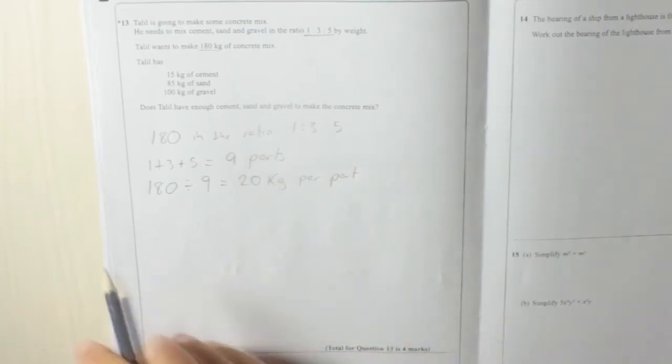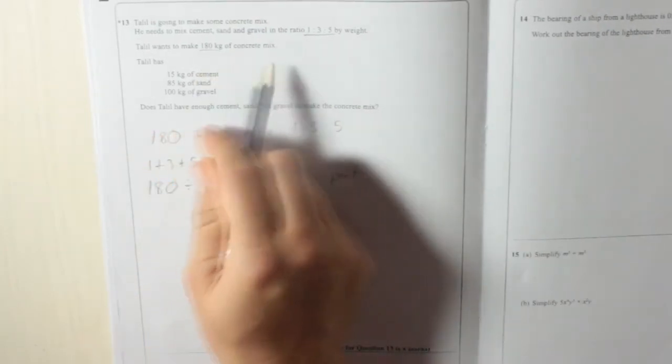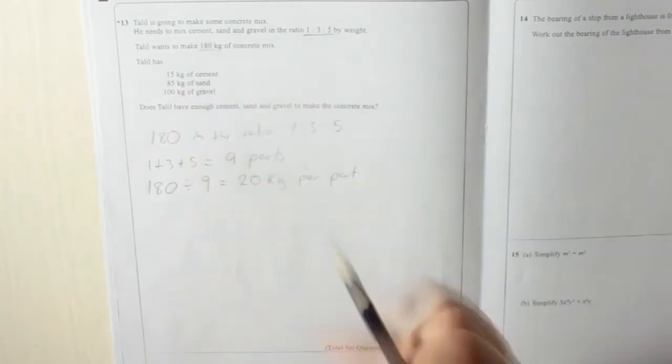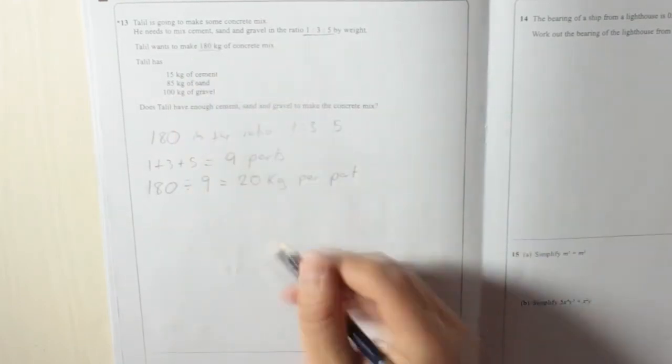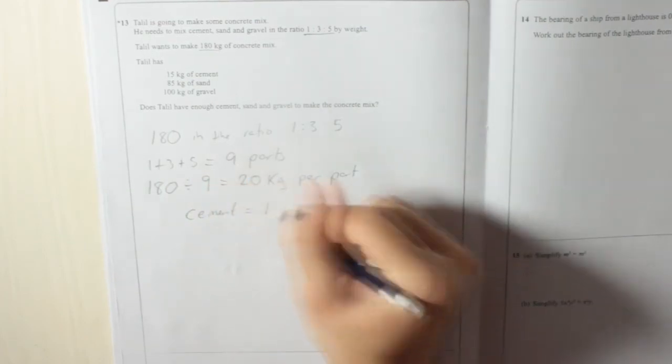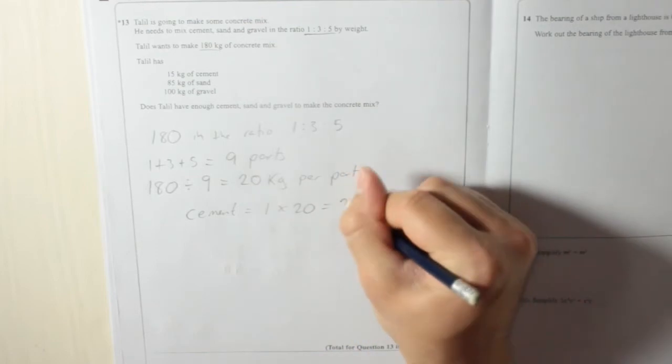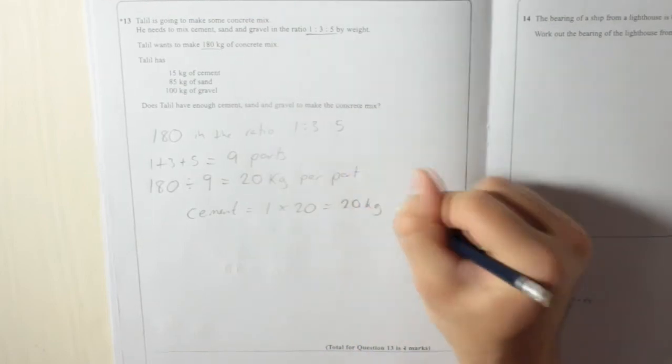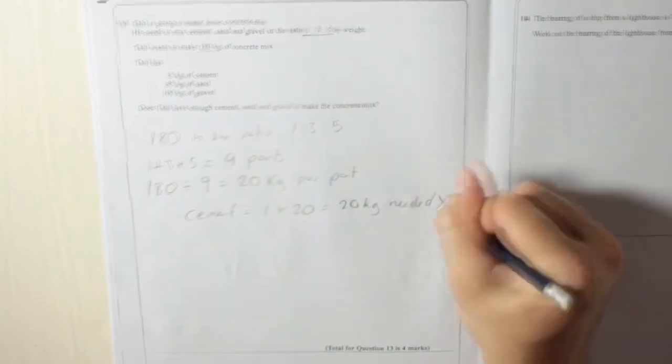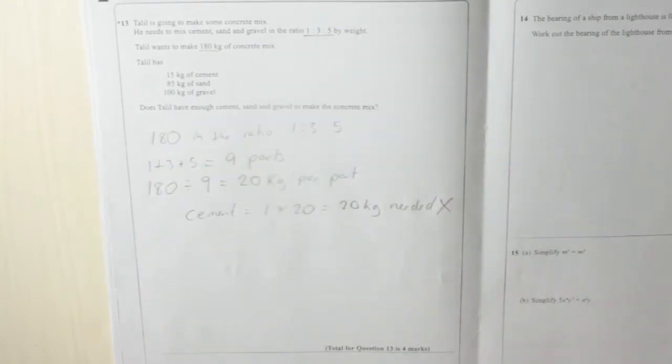So in 180 kilograms of concrete mix, there will be one part cement. So that means cement equals 1 times 20 equals 20 kilograms needed. And you can see he's got 15, so already we know he can't do it, but we'll carry on anyway.